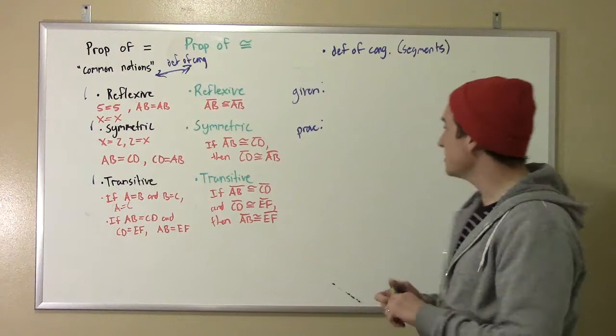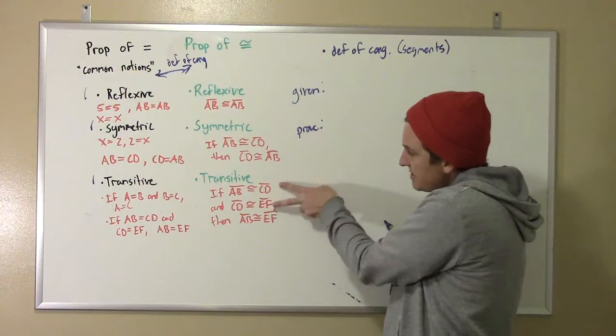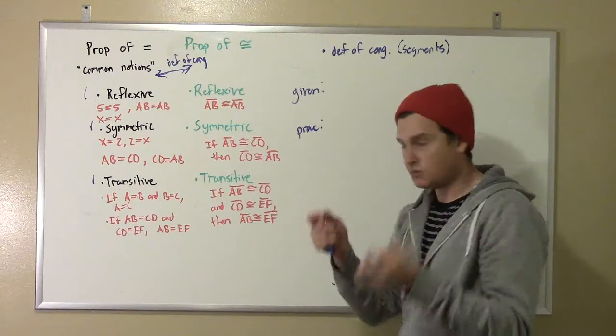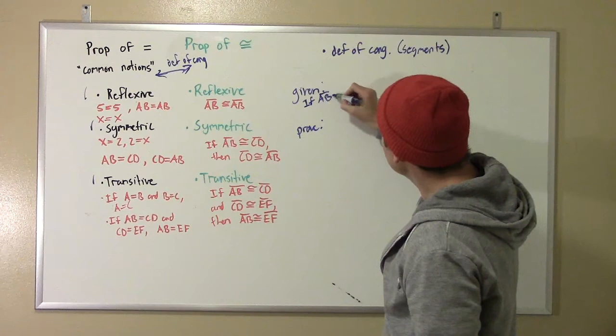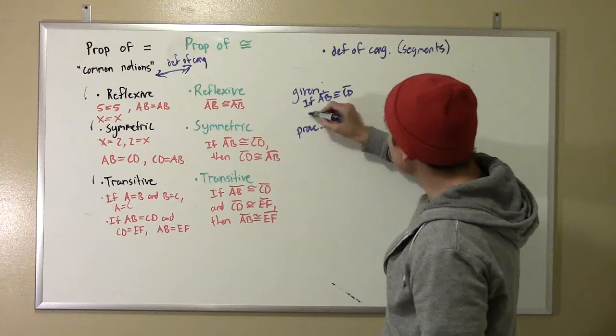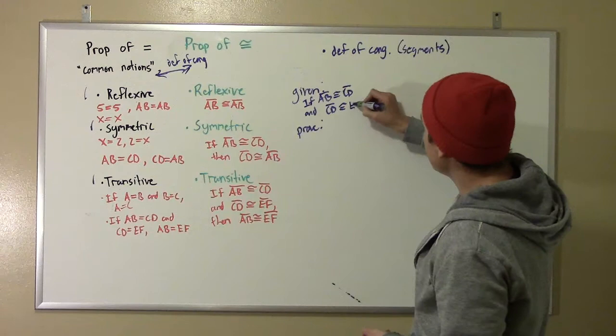So given, we're going to start with a statement that looks like this, and we're going to prove this. So we're going to start with basically three segments here. So we're going to have if AB is congruent to some other segment CD, and then that segment CD is congruent to some third segment EF.